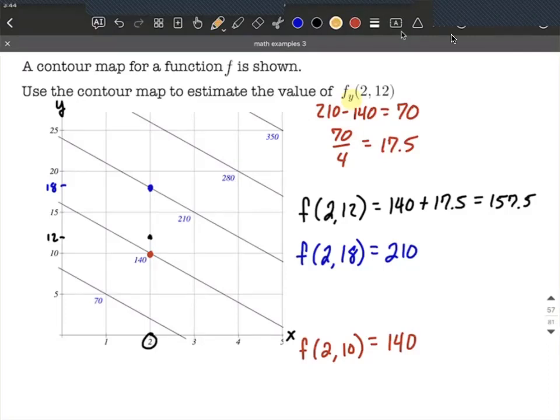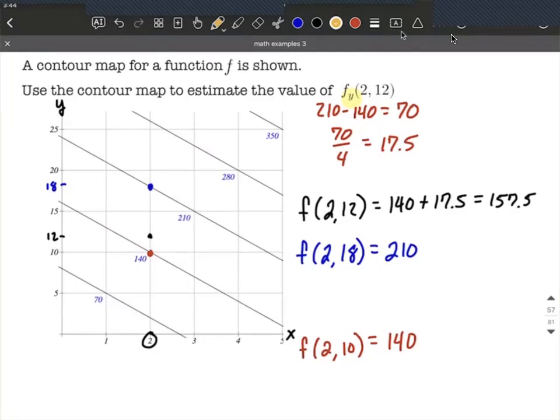All right, now partial derivatives with respect to y, really what we're going to be doing here is it's very similar to the slope formula. It's basically z2 minus z1 over y2 minus y1, because remember the y values change here, but the x values stay the same.